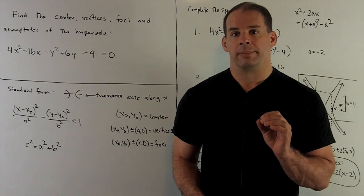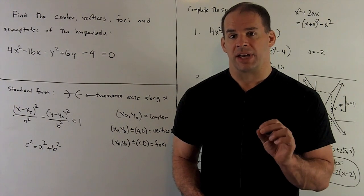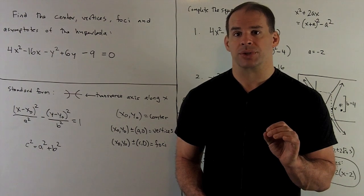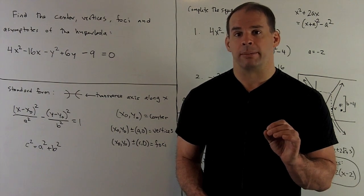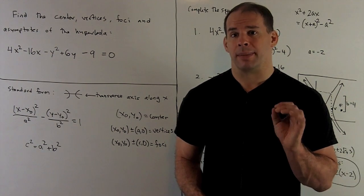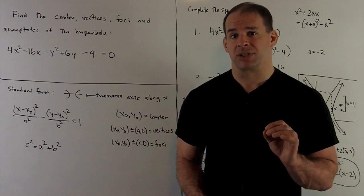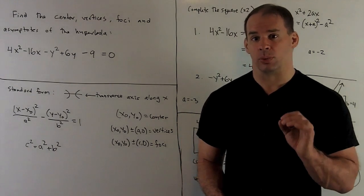For the following hyperbola, find the center, the vertices, the foci, and the asymptotes. Our equation is given by 4x² - 16x - y² + 6y - 9 = 0.